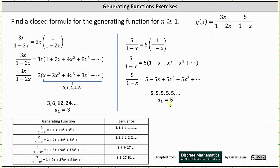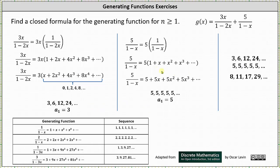Our goal is to determine a closed formula in which the result are the terms of the sequence that is the sum of these two sequences. I have listed the two sequences on the far right; the third sequence is the sum of the two sequences. Notice the inner sequence 0, 1, 2, 4, 8, and so on are powers of 2, which means the closed formula for 3, 6, 12, 24, and so on is going to be 3 times 2 raised to some power.